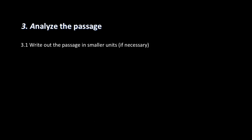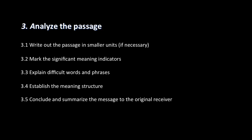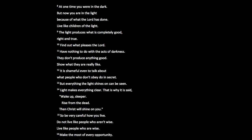Now we dig into the passage and analyze it. We write it in smaller units because it's loaded. Then we mark the meaning indicators, and we look for difficult words or phrases. We establish the meaning structure by zooming out, and then we conclude and summarize the message to the original receiver. When analyzing Ephesians 5, I read every verse and determine whether it's explanation or instruction, because that's the way Paul writes all his letters — prose with the smaller genre being either instruction or explanation.